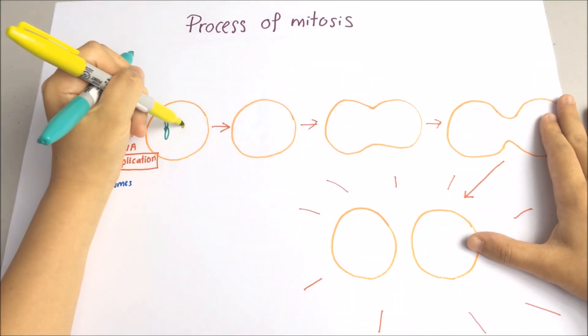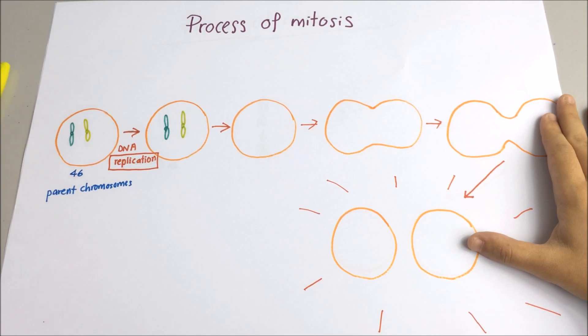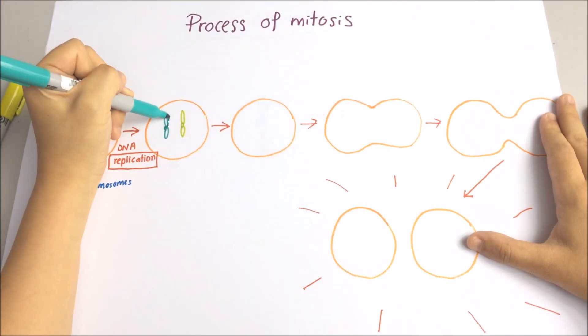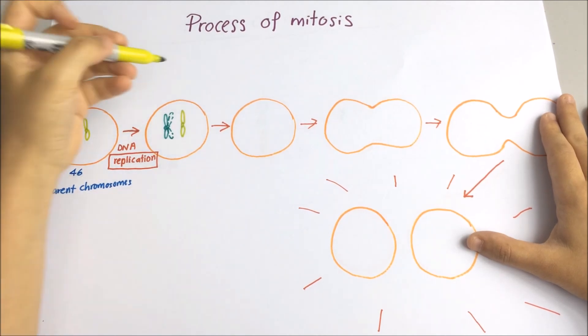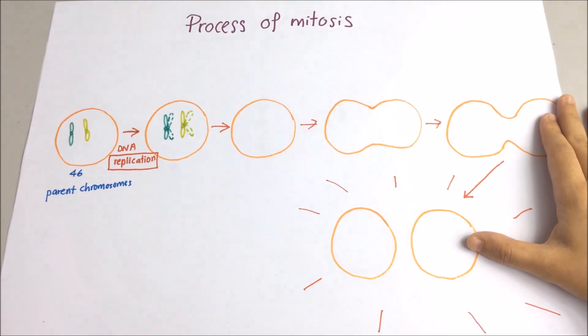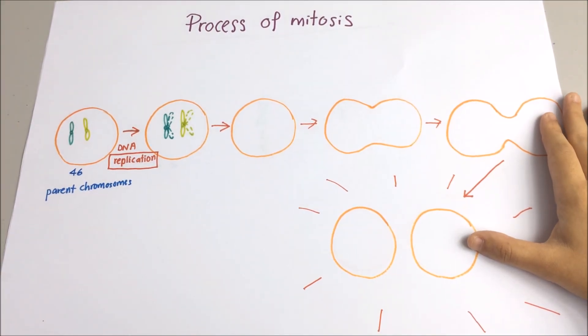So this is what happened. We can see that each copy still remains attached to the original one. So now the chromosome consists of two sister chromatids attached to each other at the centromere.